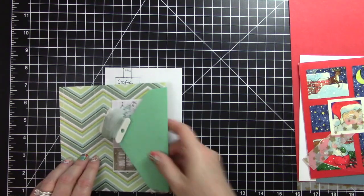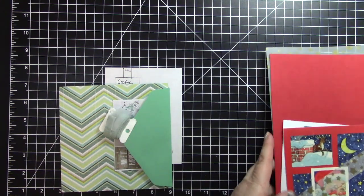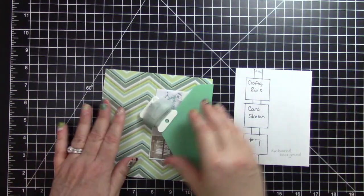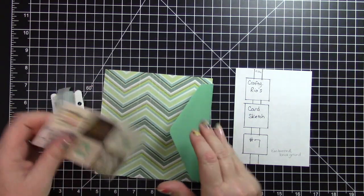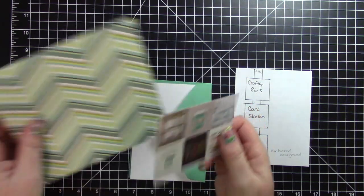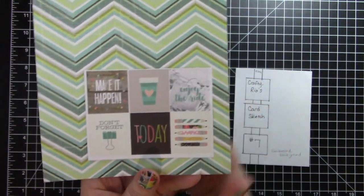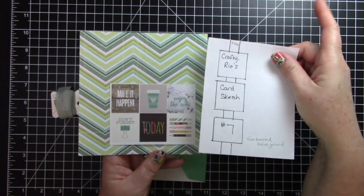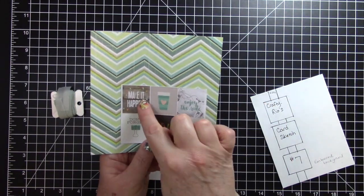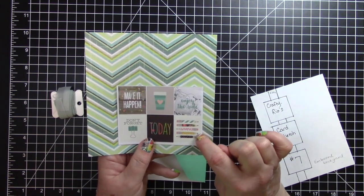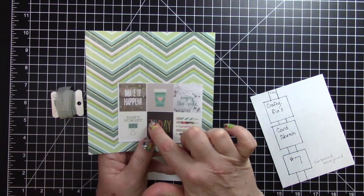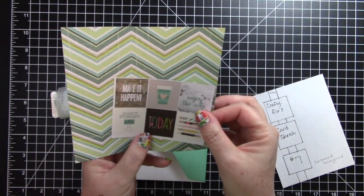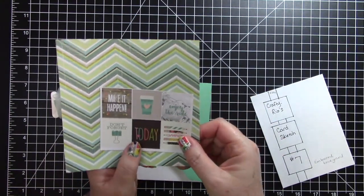The first card that we'll make is inspired by some goodies that I got in my latest Happy Mail. I have a video on that, and in that Happy Mail were these planner stickers, and there was this really pretty paper, and I thought they went really well together. These are nice square stickers that would be perfect for this. I thought I would use Make It Happen, the Coffee Cup, and the Pencils.